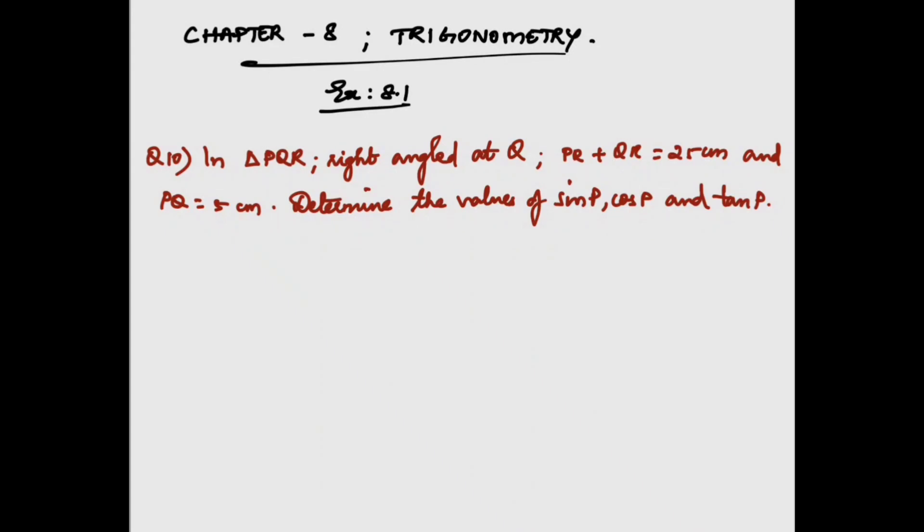Hello guys, in this video let us see question 10 of Exercise 8.1, Chapter 8: Trigonometry. In triangle PQR, right-angled at Q, PR + QR = 25 cm and PQ = 5 cm. Determine the values of sin P, cos P, and tan P.